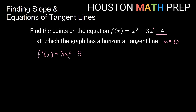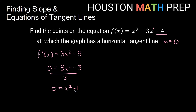Previously we plugged in an x value to find slope; now we have opposite information — we know we want slope = 0, and we need to find the x values. So we solve 0 = 3x² - 3. Dividing both sides by 3 gives x² - 1 = 0, so x² = 1. Taking the square root of both sides — remembering to include plus or minus — gives x = ±1.